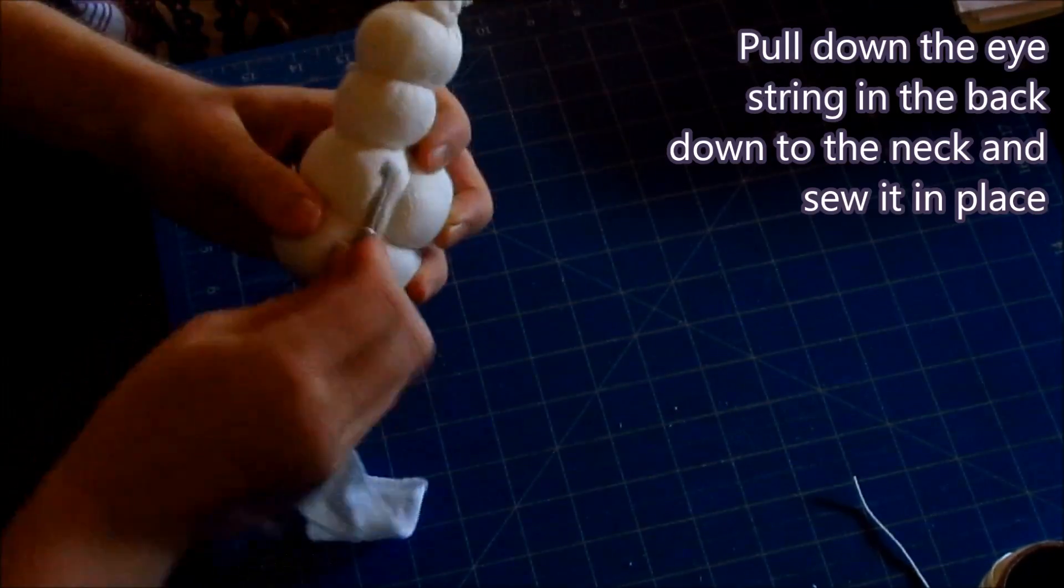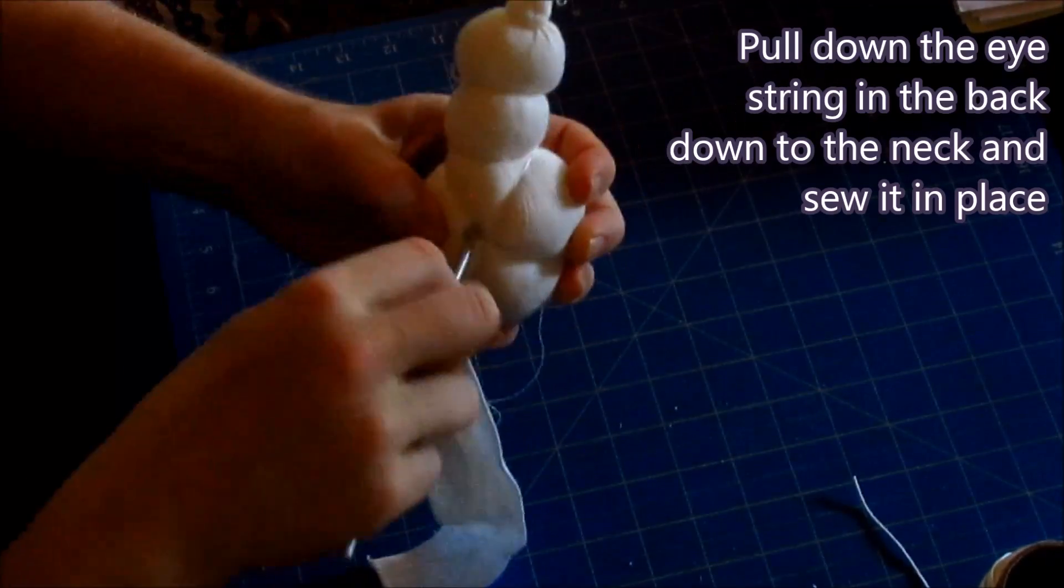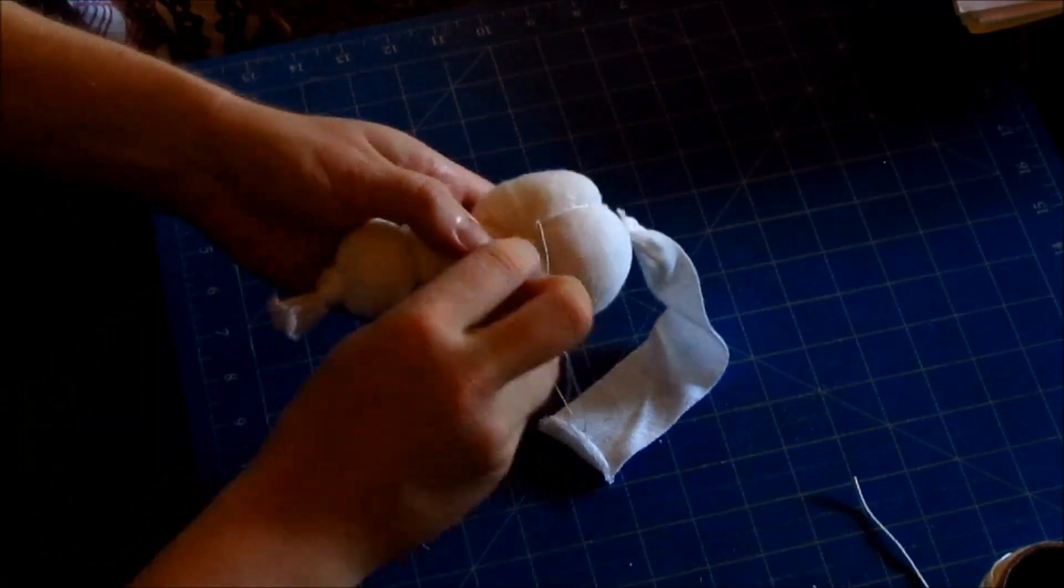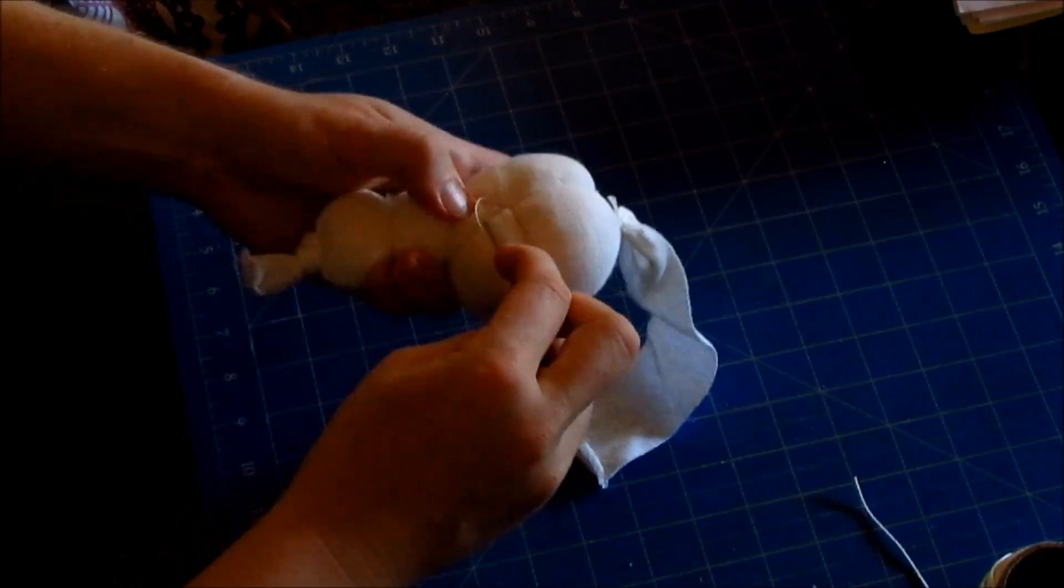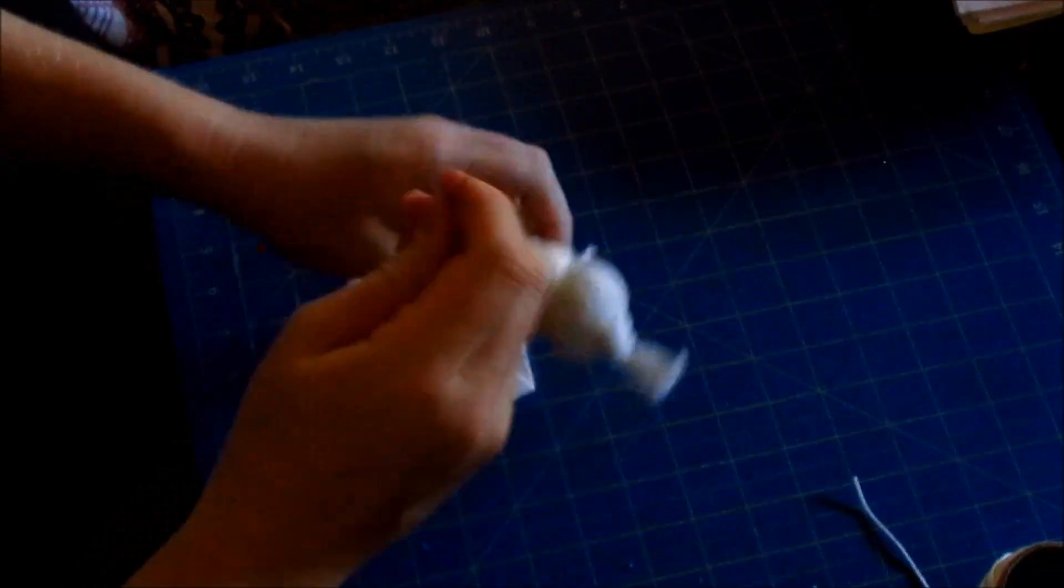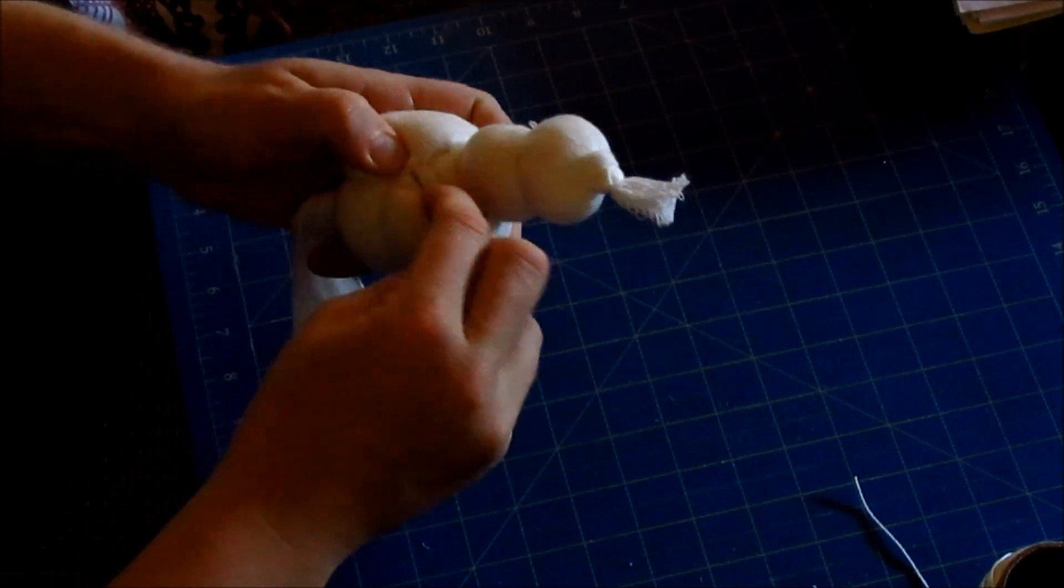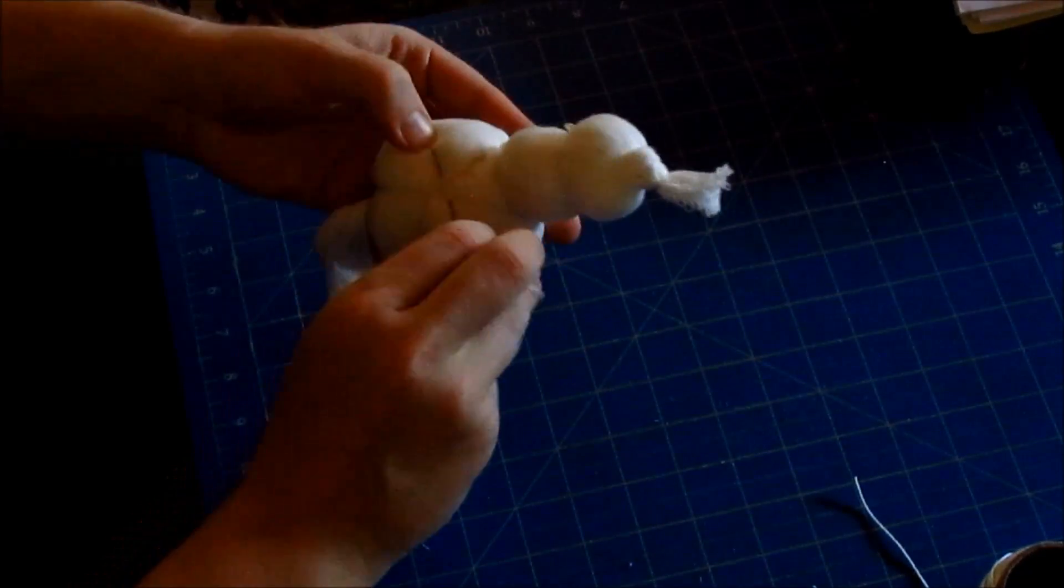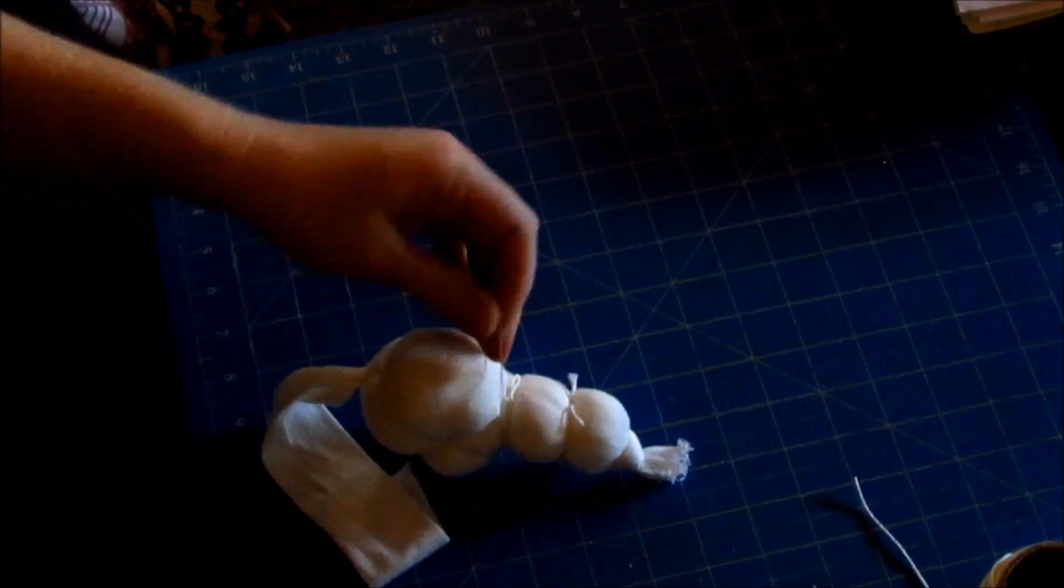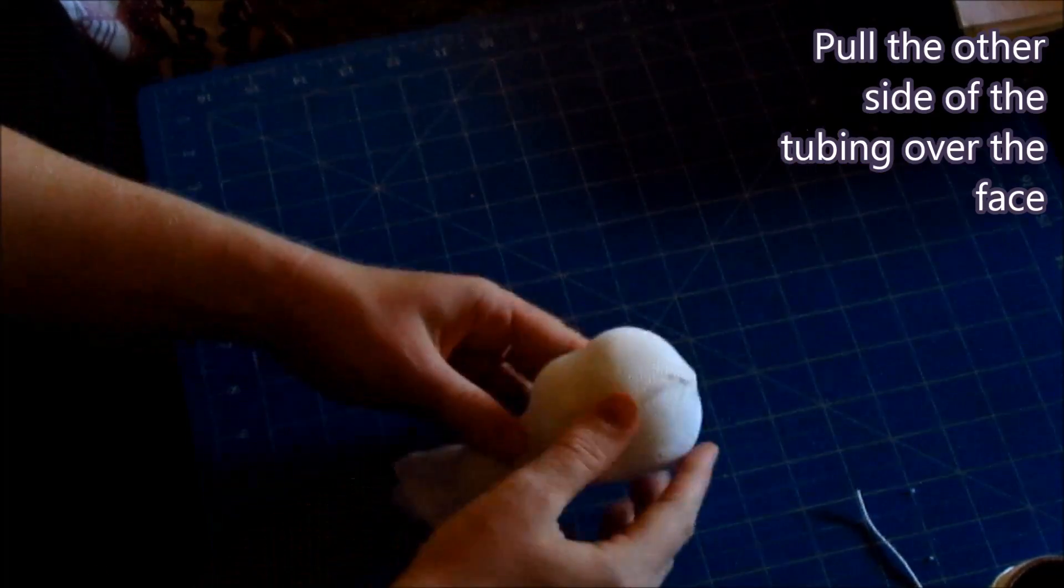Next we are going to use our crochet hook and pull down the eye string in the back down to the neck, and then we are going to sew it into place. Now pull the other side of the chubby cheeks. You've been over the face and you are done!